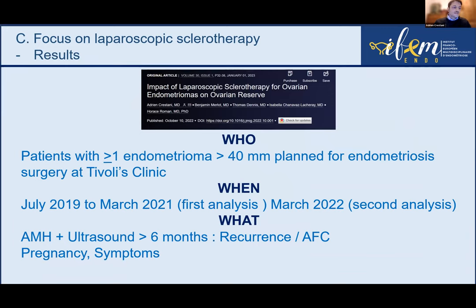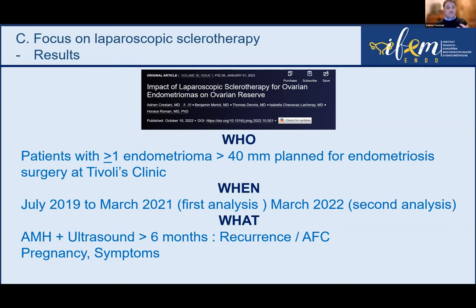What you need for laparoscopic sclerotherapy is simple — no special generator or expensive equipment: just ethanol, a 60 mL syringe, and a Foley catheter. Horace Romand asked me to review the data from sclerotherapy cases performed between July 2019 and March 2021 for our first published analysis. Today I'll also present updated data through March 2022.